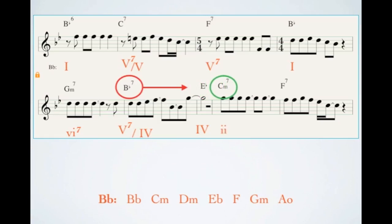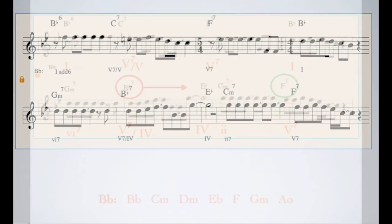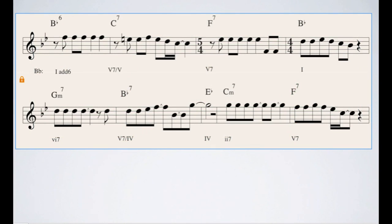Then we have the Cm7, which is a II, and the F7, which is V7. Now that we have it all analyzed, let's have one more listen and see if you can really wrap your ear around the sound of that secondary dominant resolving.